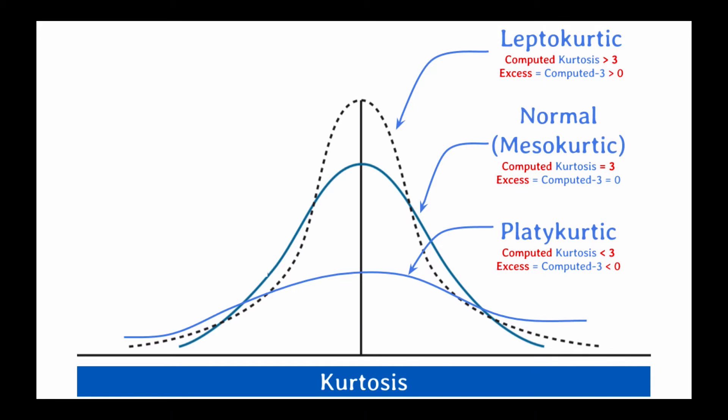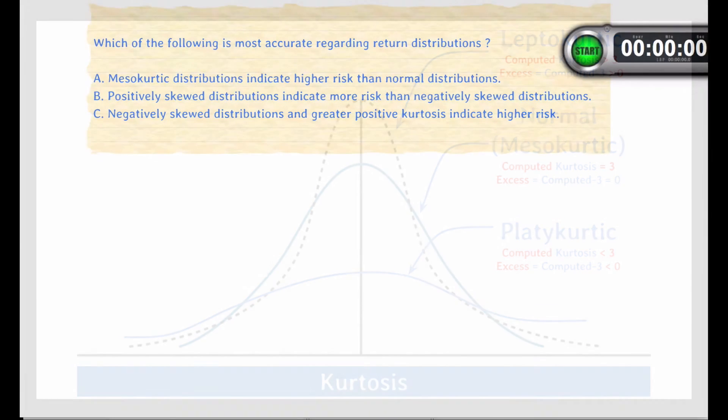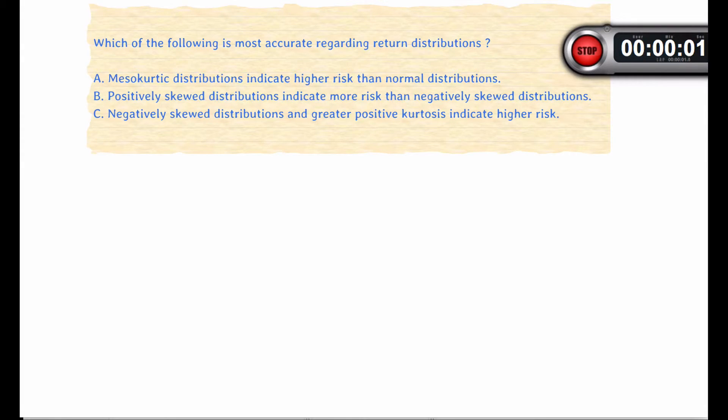Remember, a greater likelihood of a large deviation from the mean implies increased risk. So leptokurtic distributions have increased risk. Okay, with that, let's look at a couple of examples.